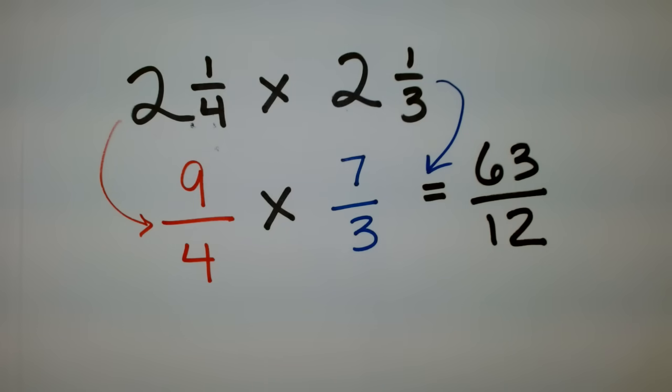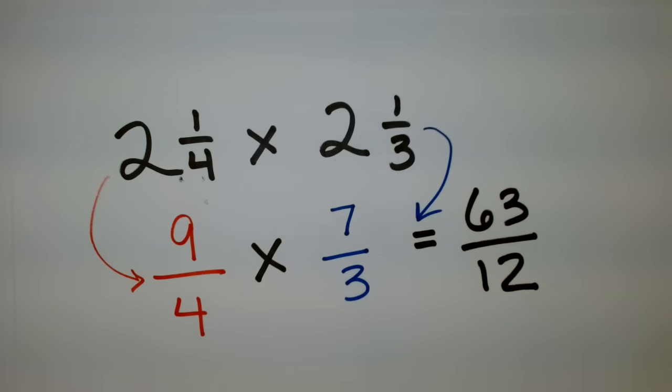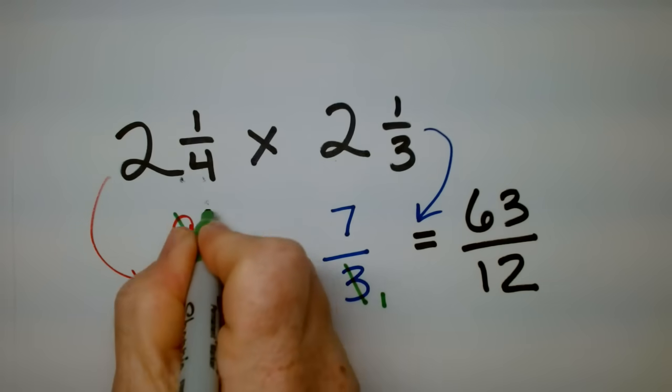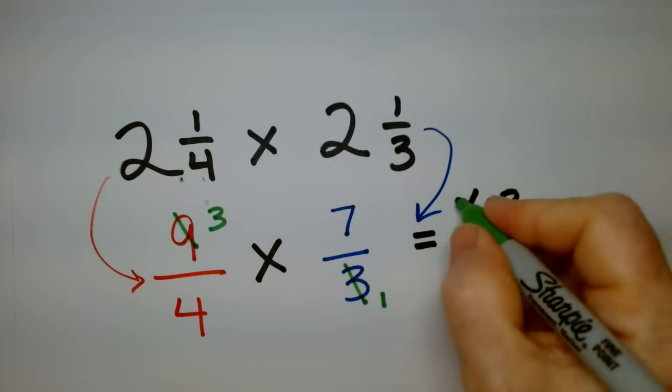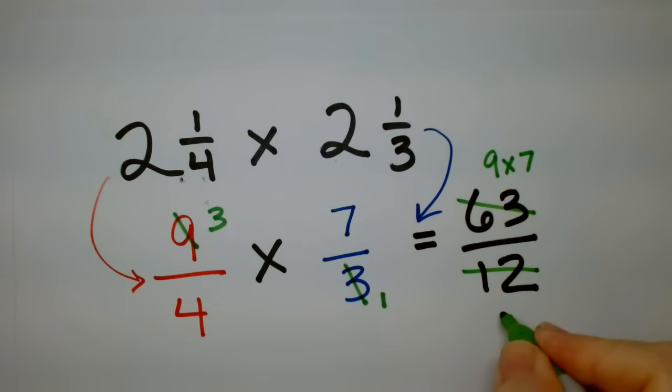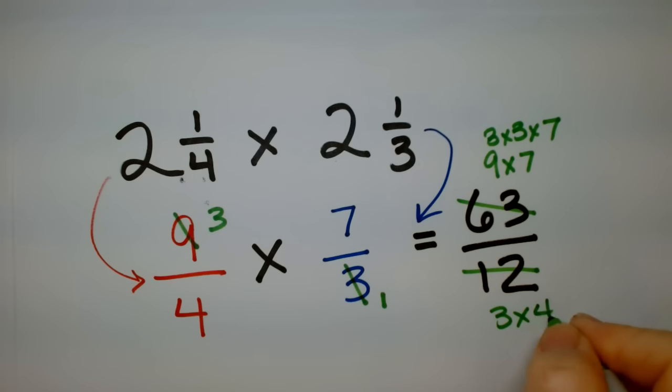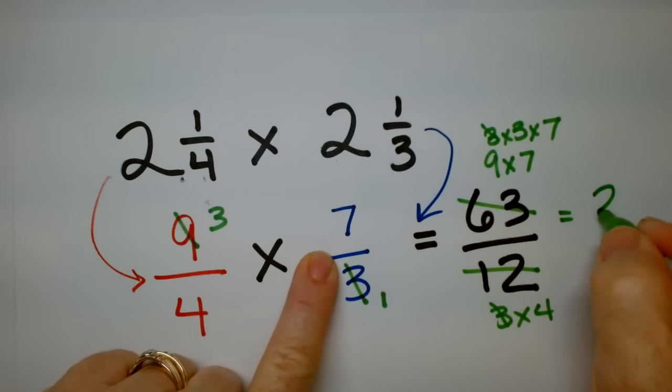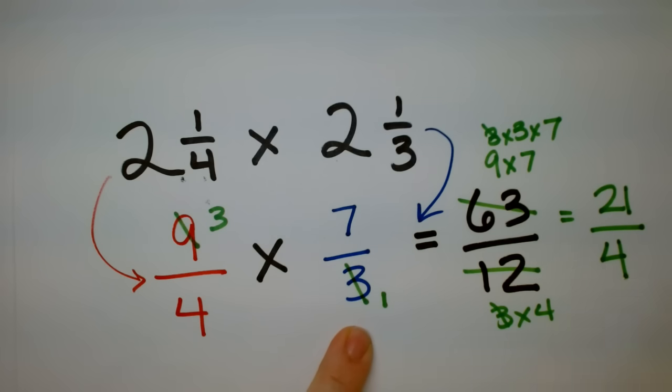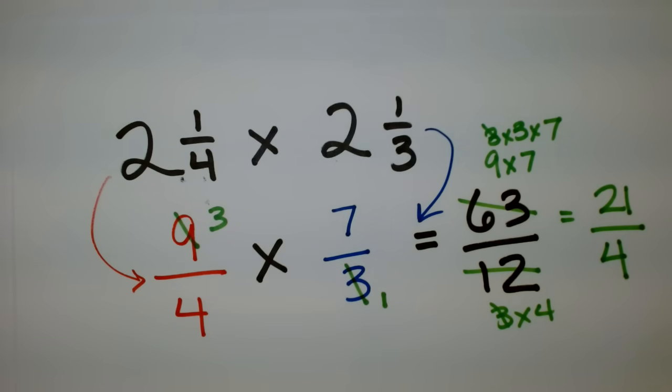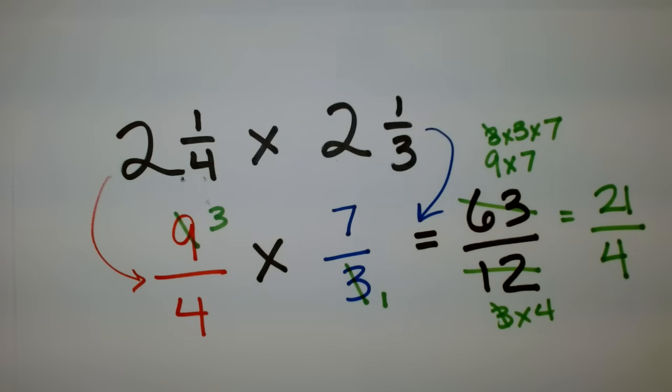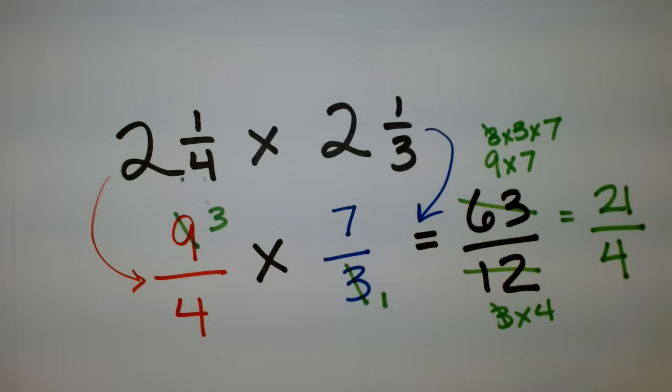Somebody's asking can I reduce that before I multiply. Sure, do you want to do that first? So, reducing it before we multiply. So, this would become a 1. This would be a 3. So, this is 9 times 7, which is 3 times 3 times 7, because 9 is 3 times 3. This is 3 times 4. So, one of those 3's gets knocked out. I am left with 3 times 7 is 21 over 4 times 1, which is 4. So, this reduces down to 21 over 4. We just divide the top and bottom by 3, or you can do it here. Good. Thank you for catching that.